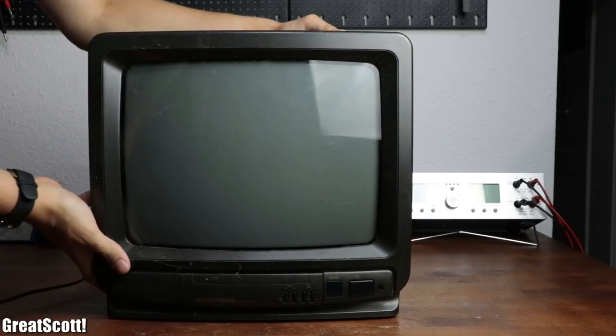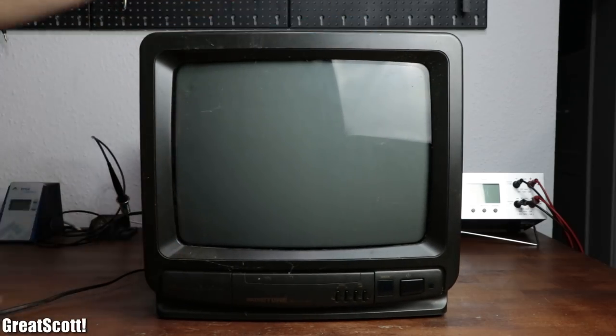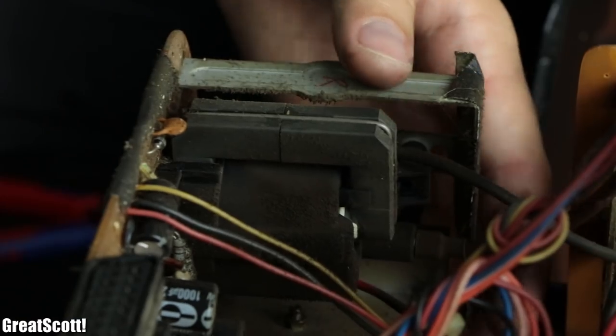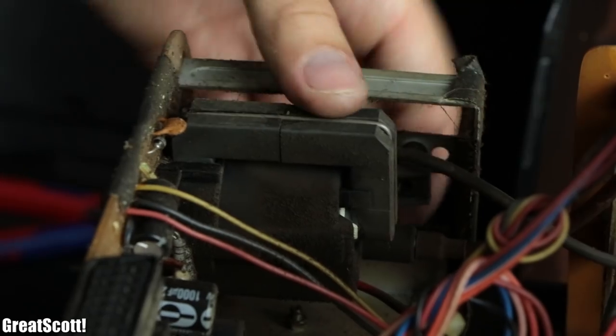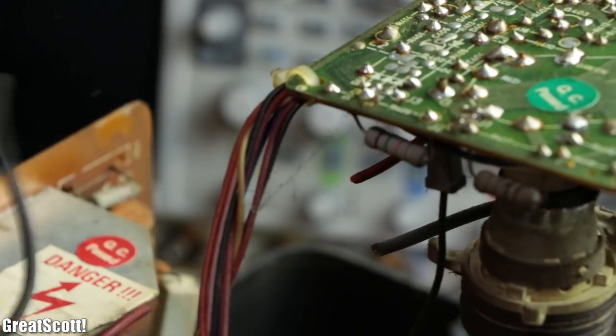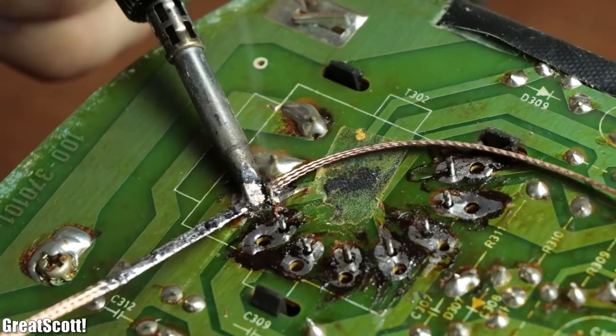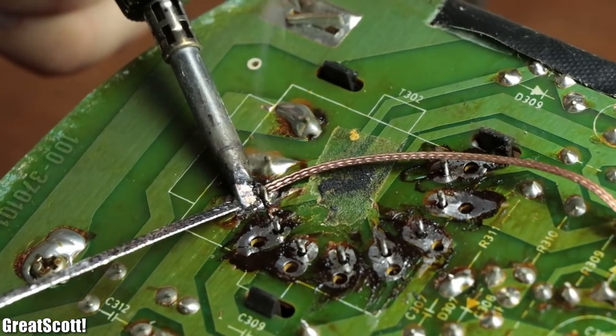Luckily a friend of mine got an old one laying around which after I opened up its enclosure offered me a usable flyback transformer. So I cut off all of its wires, removed the main circuit board it was sitting on, and used some solder wick to get rid of its solder connections.